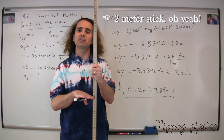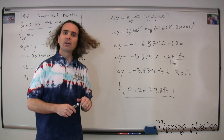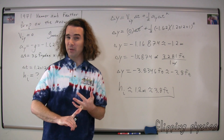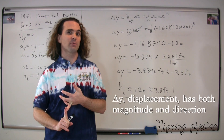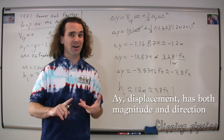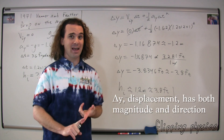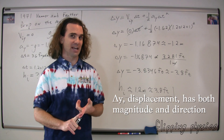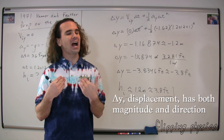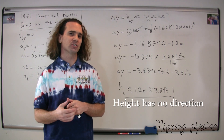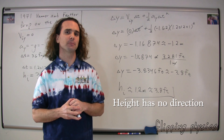Yes, Bobby, you have a question? 'Mr. P, where did the negative go?' The delta y, or the displacement, has both magnitude and direction. Because the hammer and feather were going down, the displacement was negative. However, I asked for the height initial above the ground, which is a positive number.